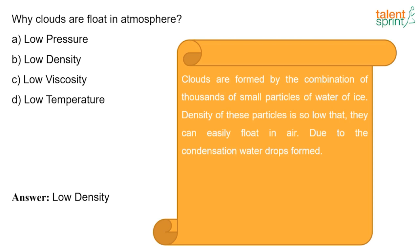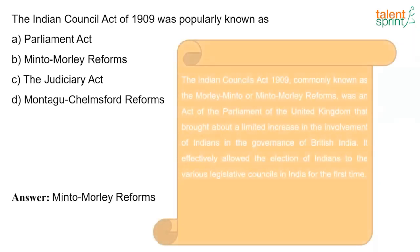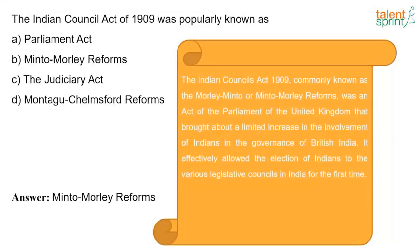The Indian Councils Act of 1909 was popularly known as the Morley-Minto Reforms. It is commonly known as Morley-Minto or Minto-Morley Reforms. It was an act of the Parliament of the United Kingdom that brought about a limited increase in the involvement of Indians in the governance of British India and effectively allowed the election of Indians to various legislative councils in India for the first time.